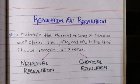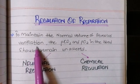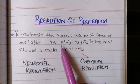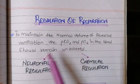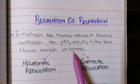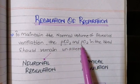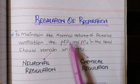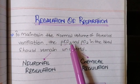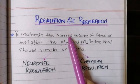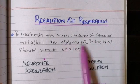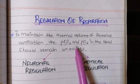Starting from the regulation of respiration — that is, to maintain the normal volume of alveolar ventilation inside the lungs. To maintain the normal volume, the partial pressure of carbon dioxide and oxygen should remain unaltered. This is the basic target of respiratory regulation. To maintain alveolar ventilation, we have to maintain the normal amount of carbon dioxide and oxygen in the blood.